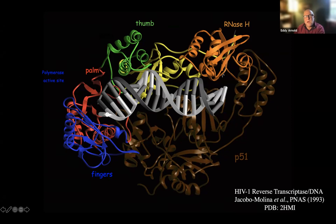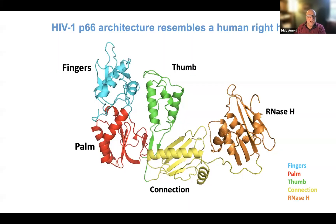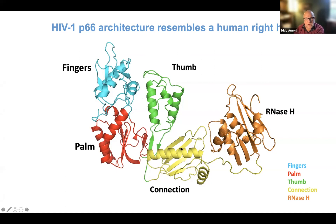This was the first structure of any polymerase with nucleic acid bound in a relevant fashion for catalysis. There's a P66 subunit that has all of the catalytic activity and holds the nucleic acid, and a P51 subunit that surprisingly has the same amino acid sequence — so this is a heterodimer — but a different folded arrangement. In the P66 subunit you see a finger, palm, and thumb motif that resembles a human hand, able to grasp the nucleic acid and carry out catalysis. There's also a connection subdomain linking a second catalytic domain, RNase H.